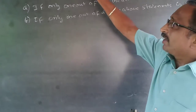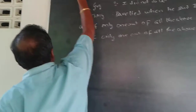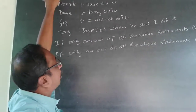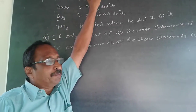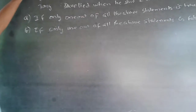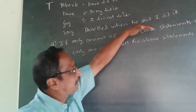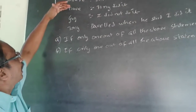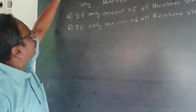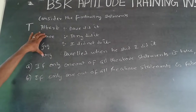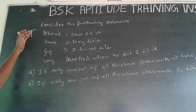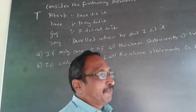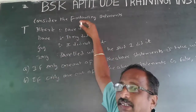What I normally do is I will always take the first statement to be true. On the basis of this, I will presume that Dave has done it. If Albert is true, whatever he says is right — Dave has done it. I will check whether the other three are becoming false, because as per this condition one statement is true, so the other three will have to be false.